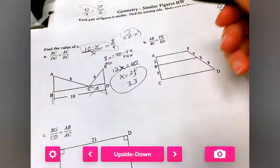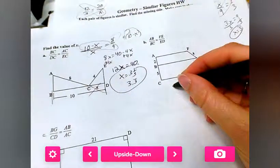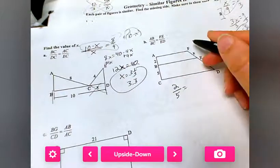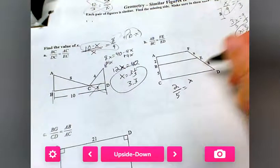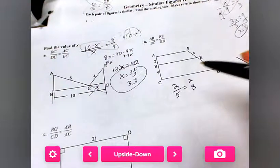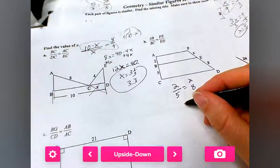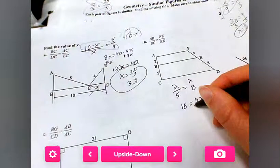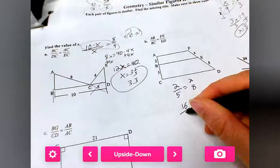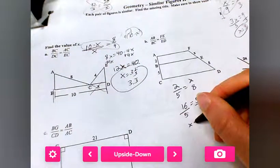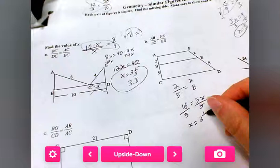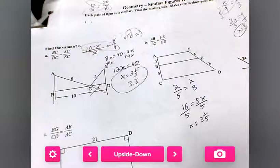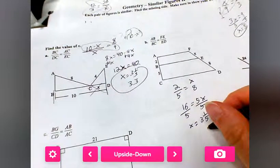AB is 2, BC is 5, FE is x, and ED is 8. So we're going to cross multiply. 2 times 8 is 16, 16 equals 5x. Divide both sides by 5, x equals 3 and one fifth. Or what's the decimal equivalent to that? 16 divided by 5 is 3.2.